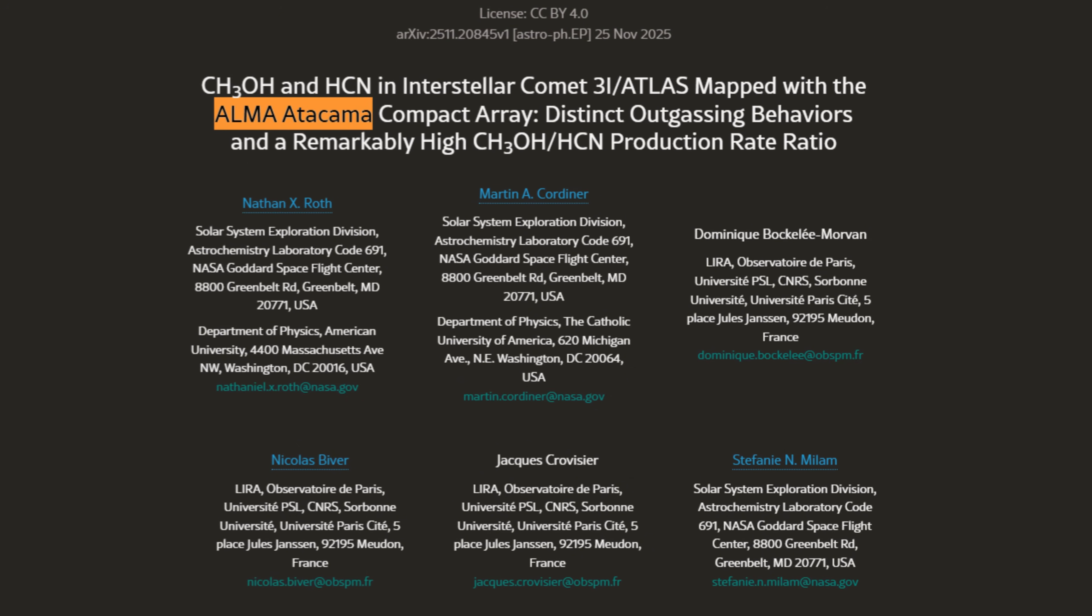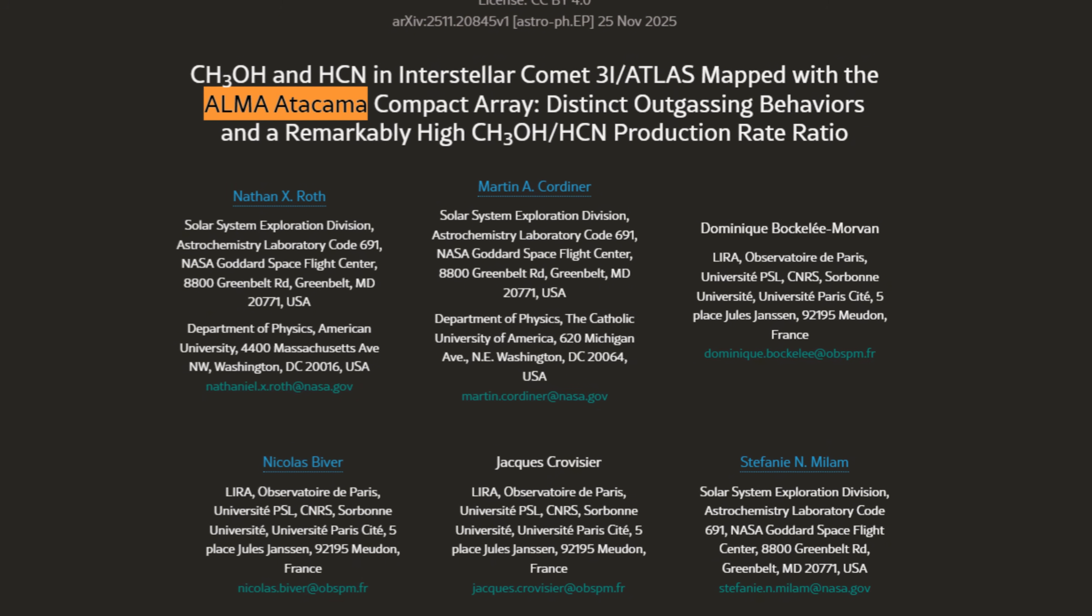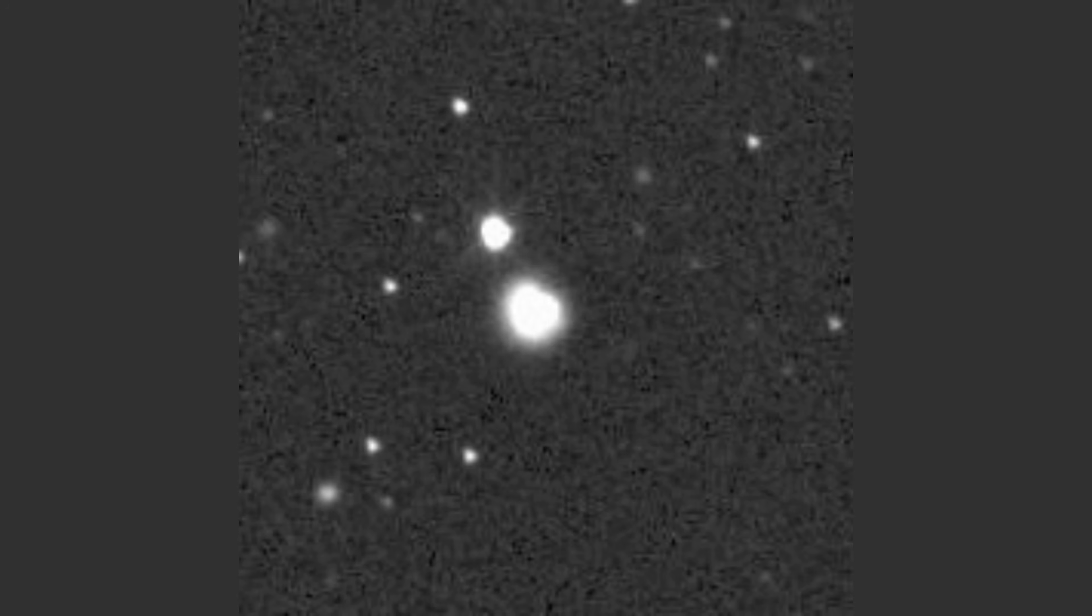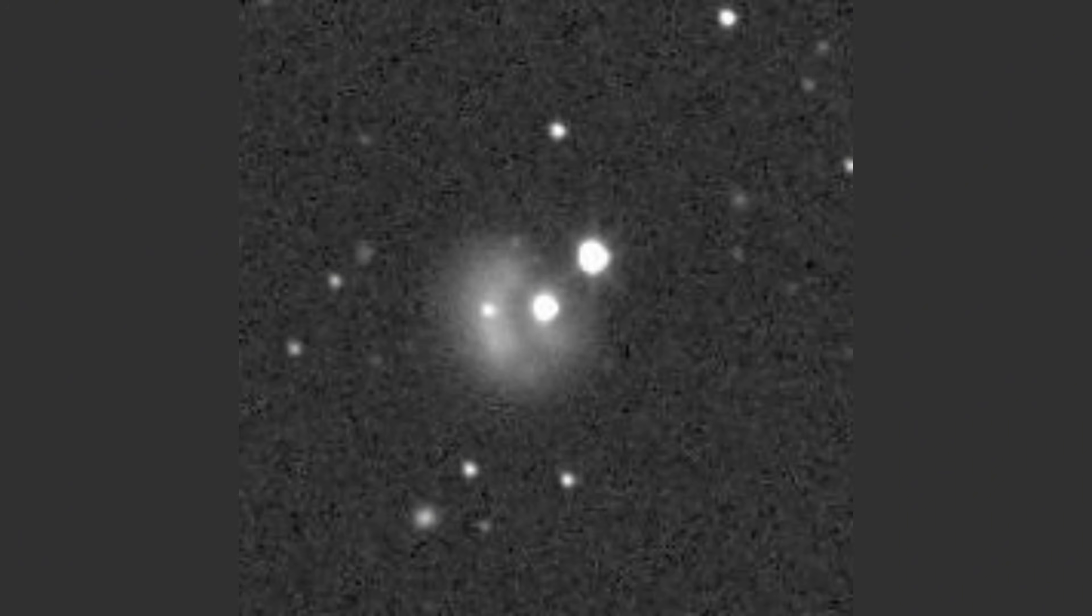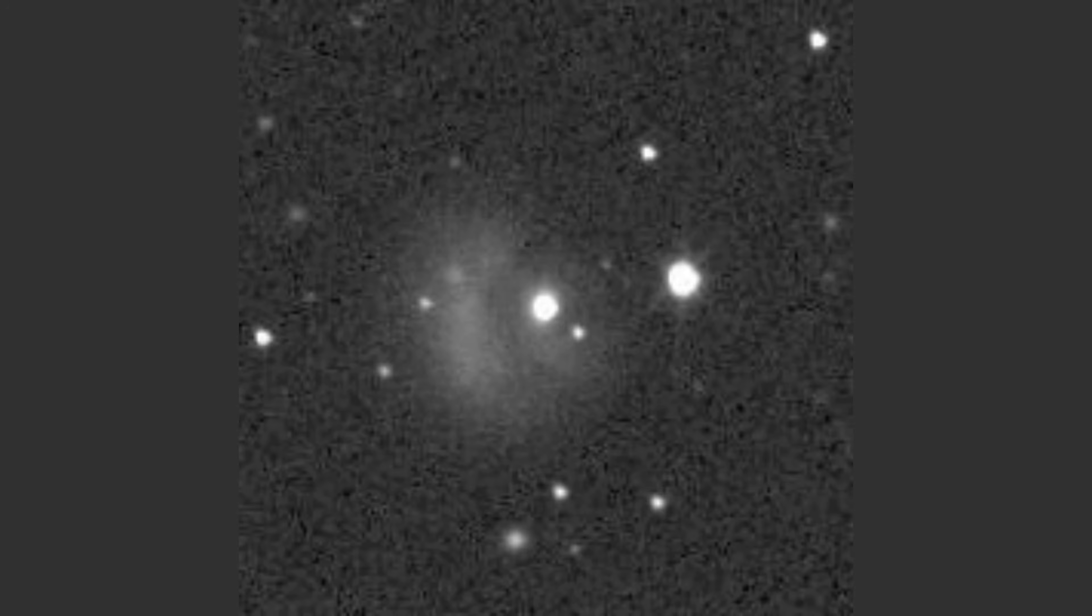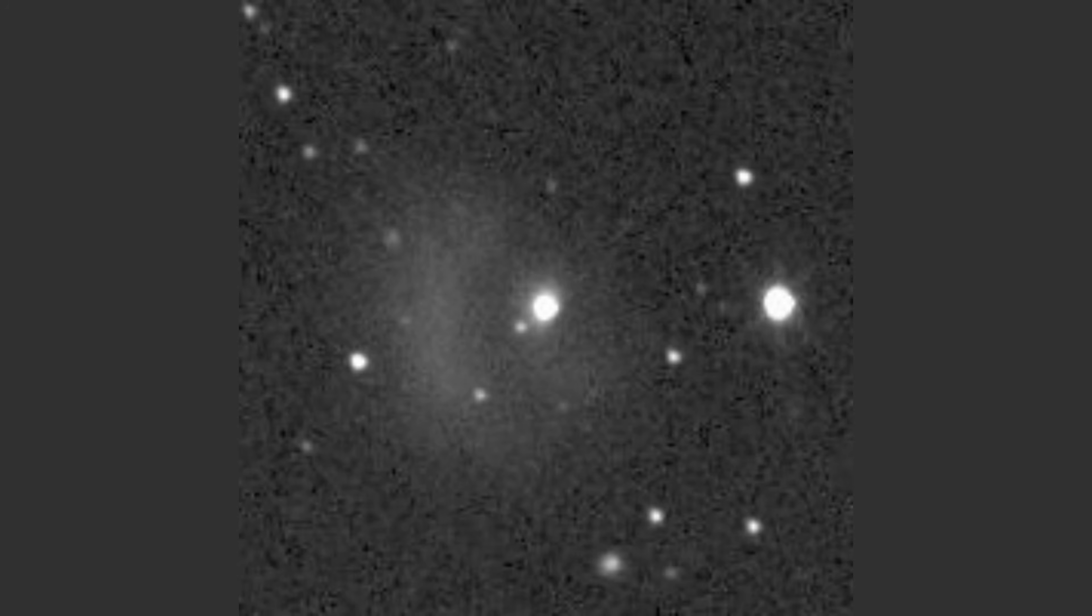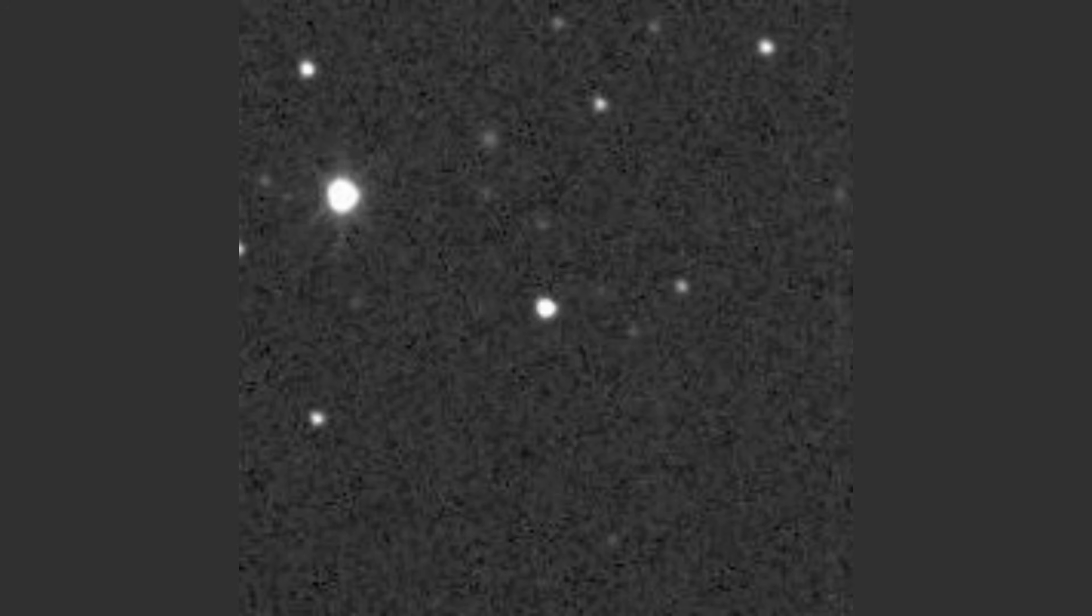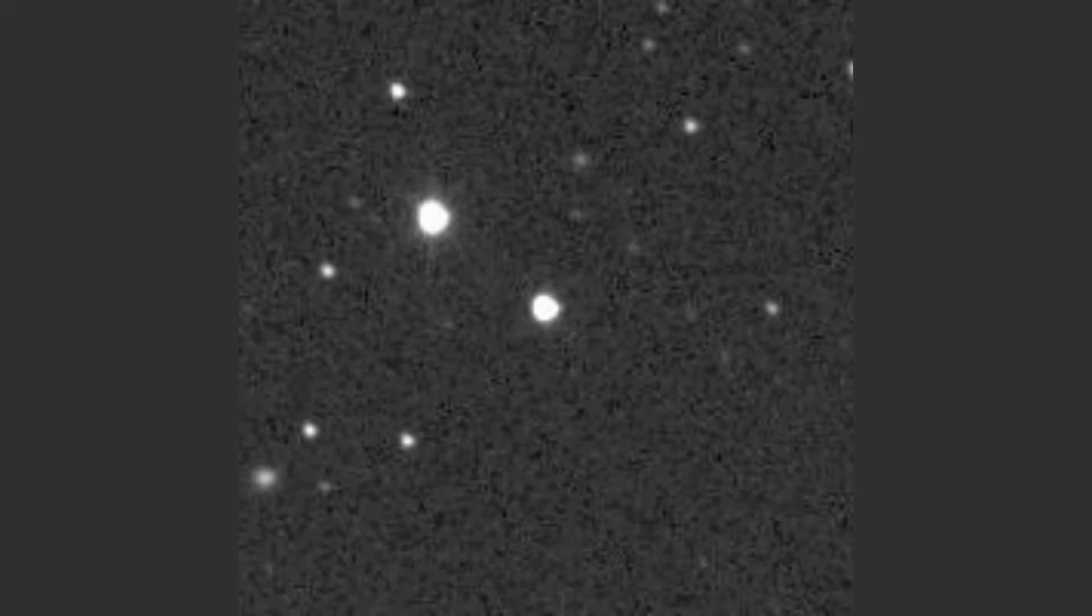Methanol emissions surged dramatically between August and October, while hydrogen cyanide appeared unevenly distributed around the nucleus, depleted in the sunward direction. The ratios between these molecules are among the highest ever recorded in a comet, rivaled only by one of the strangest comets on record.